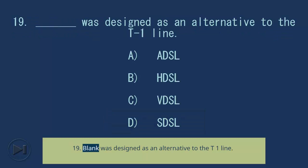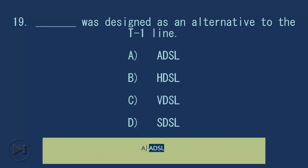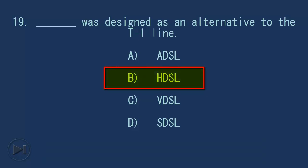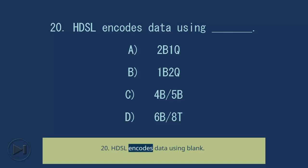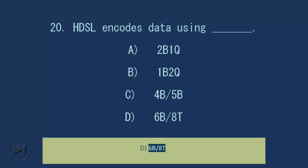Question 19: Blank was designed as an alternative to the T1 line. A. ADSL. B. HDSL. C. VDSL. D. SDSL. Answer: B. HDSL. Question 20: HDSL encodes data using blank. A. 2B1Q. B. 1B2Q. C. 4B/5B. D. 6B/8T. Answer: A. 2B1Q.